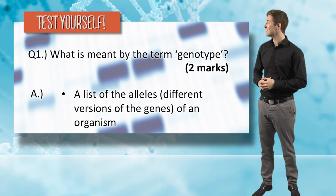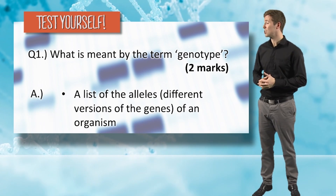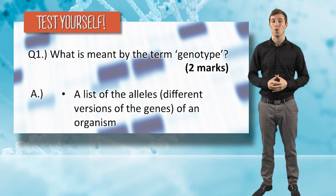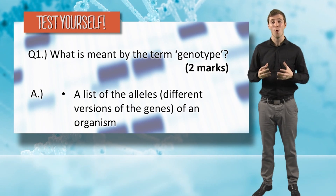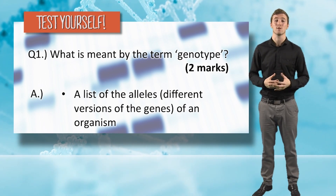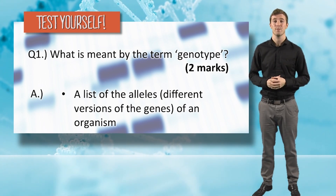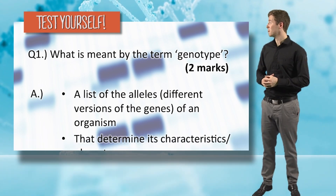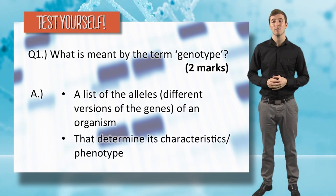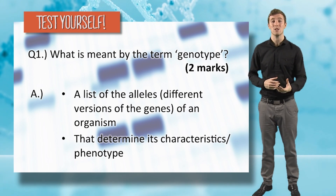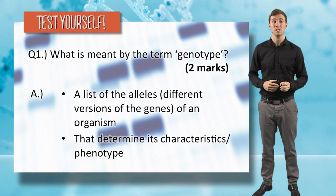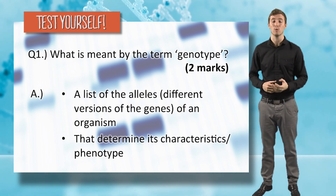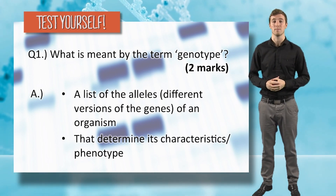A genotype is a list of the alleles, or the different versions of a gene, of an organism — basically all of the genes and the versions of those genes. The second point refers to what those alleles do: they determine the characteristics or the phenotype of an organism.